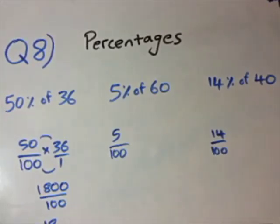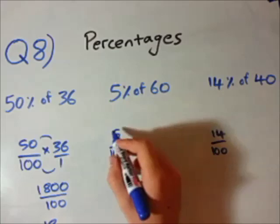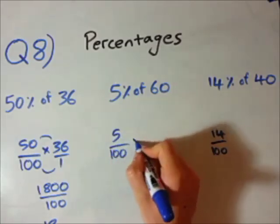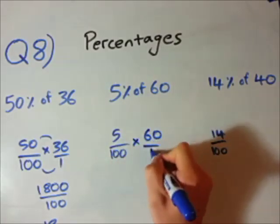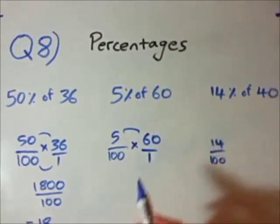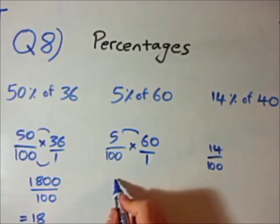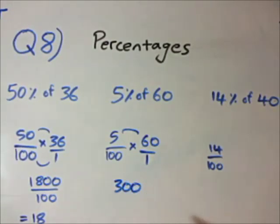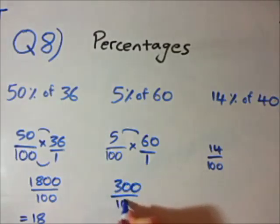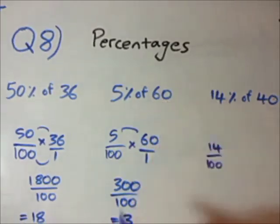Let's look at the second one now. 5% of 60, I've got 5 over 100, my fraction is fine. I'm going to times it by 60 over 1. 5 times 60, well that's going to be 300, I don't need my phone for that one. 100 times 1, so my final answer, 300 over 100 is 3. So, 5% of 60 is 3.